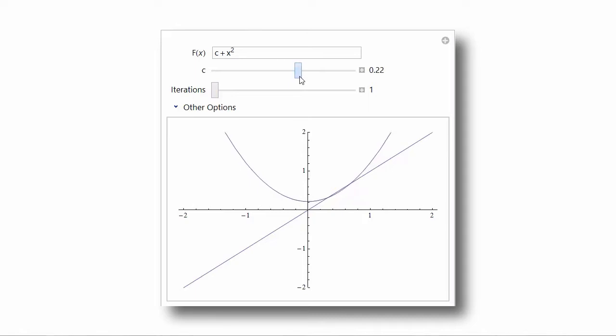when the parabola is tangent to the line y equals x, right at 0.25, if I can get that exactly, maybe not, there's just one fixed point and then for values of c greater than 0.25, there are no fixed points. In fact, this kind of bifurcation is called a tangent bifurcation. Why? Because it happens right when the parabola is tangent to the line y equals x.